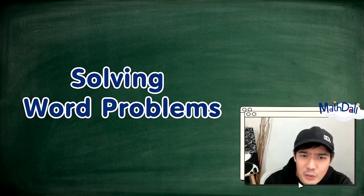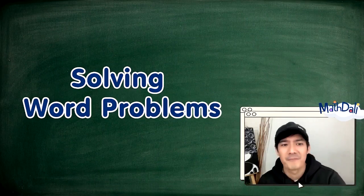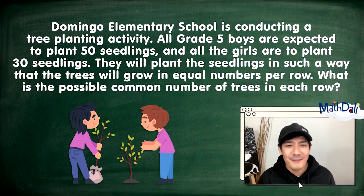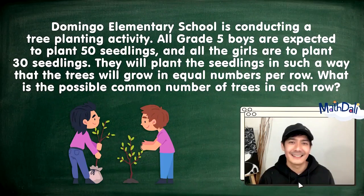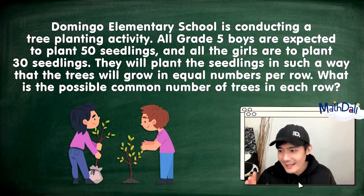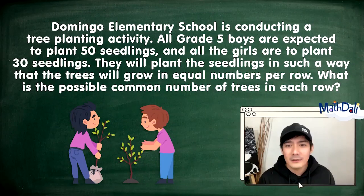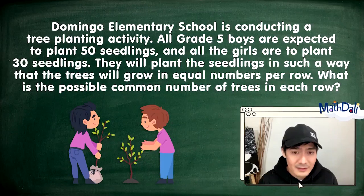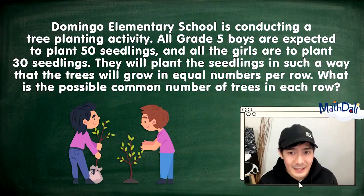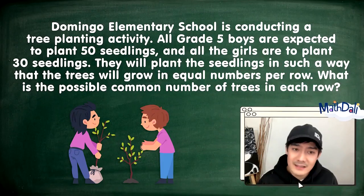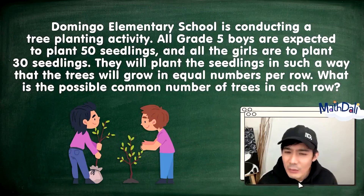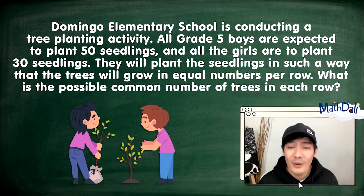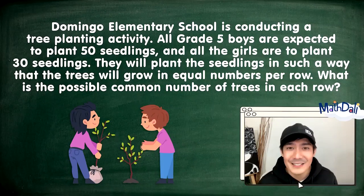Simulan po natin ang usapan with this simple word problem. Ang Domingo Elementary School is conducting a tree planting activity. All Grade 5 boys are expected to plant 50 seedlings, and the girls are to plant 30 seedlings. They will plant the seedlings in such a way that the trees will grow in equal numbers per row. What is the possible common number of trees in each row?